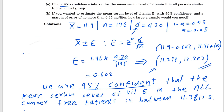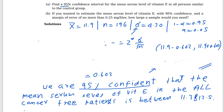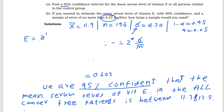Now go back to part B — it is asking for the sample size n. How do we find the sample size? We know the margin of error is 0.25. We use the equation: E equals z-star times sigma over root n. We use this equation because the margin of error is given. The margin of error is 0.25. What is z-star? They are asking for 90% confidence.